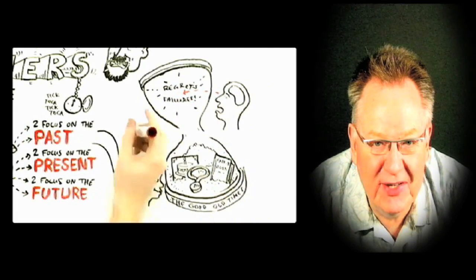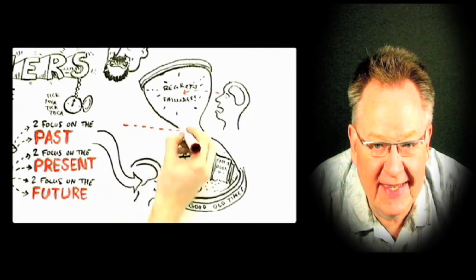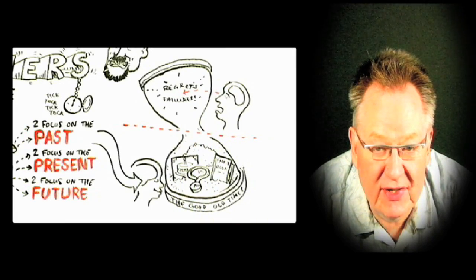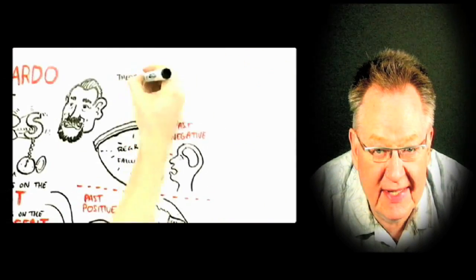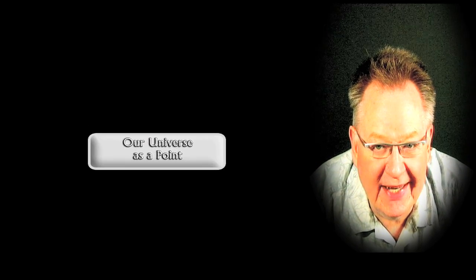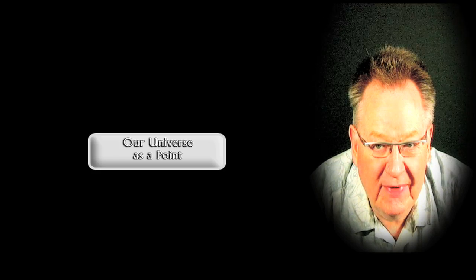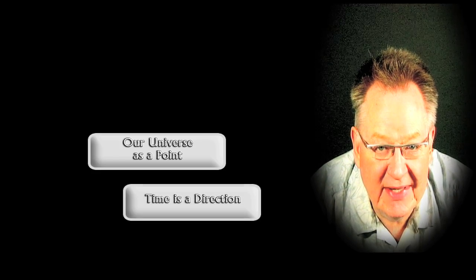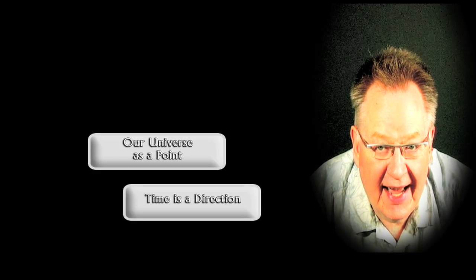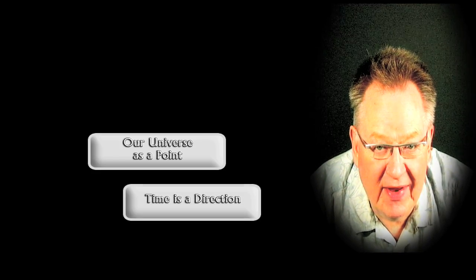With my approach to visualizing the dimensions, our universe has six dimensions to express all possible versions of itself, and all of that becomes a single point in the seventh dimension. We looked at this most recently in 'Our Universe as a Point.' A couple of years ago in this blog, in an entry called 'Time is a Direction,' I had this to say about the number six.